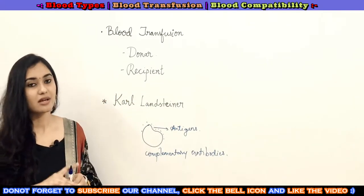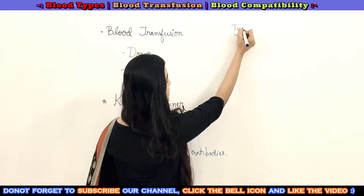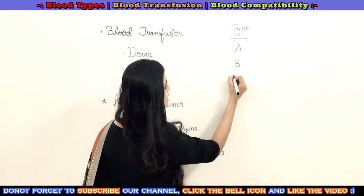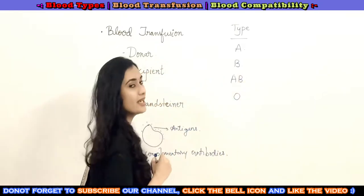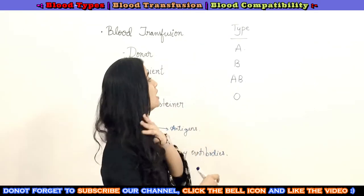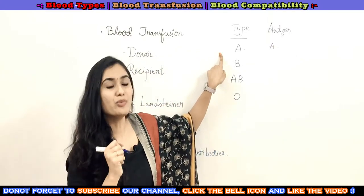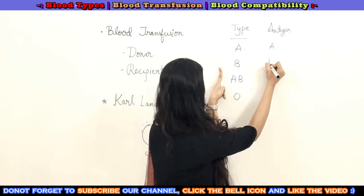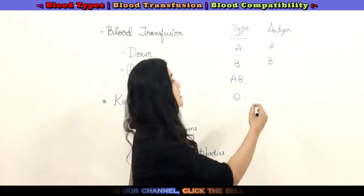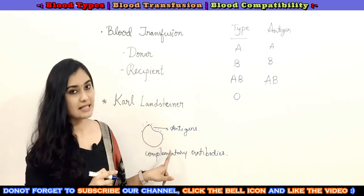Based on the presence and absence of antigens, we have classified blood groups into four main types: blood group A, blood group B, AB, and O. If there is a presence of antigen A, you call it blood group A. If there is a presence of antigen B, you call it blood group B. If there is a presence of both antigen A and antigen B on the surface of RBC cells, that blood group is AB.